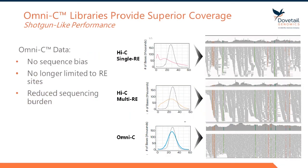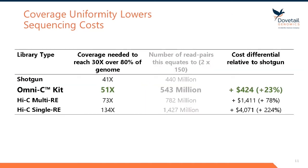Our Omni-C product is really designed to be this all-in-one assay. Here we're talking about genomic coverage — the figures in the middle are what you've seen previously, and on the right we show the read pileup in Integrated Genome Viewer. We can see that restriction enzyme-based approaches leave very clear gaps in coverage, which doesn't provide sufficient support for things like SNP calling. Our approach provides shotgun-like genome coverage, which opens up applications beyond genome conformation or genome assembly.